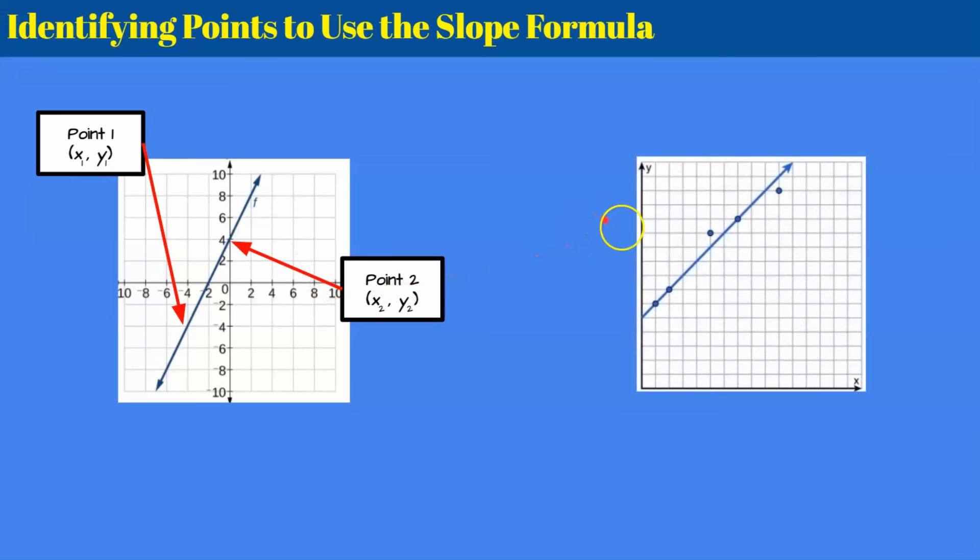If you're looking at a line of fit on a scatter plot, I could identify this is point 1 and this is point 2. Some people might use this is point 1 and this is point 2. That would be fine too. As long as the two points are on the actual line and you can identify their value, you're all set to find slope.